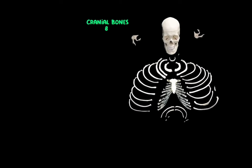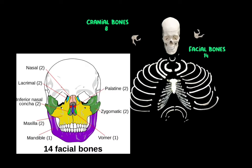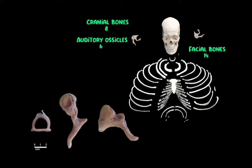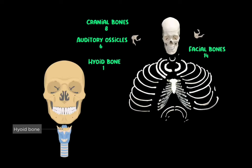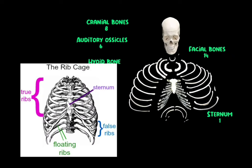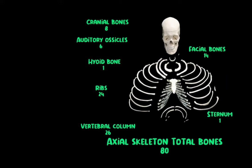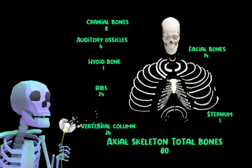You have 8 cranial bones, 14 facial bones, 6 auditory ossicles — 3 ossicles present in each ear — 1 hyoid bone to which your tongue is attached, a sternum to which 12 pairs of ribs are attached, and the vertebral column has 26 bones. So in total the axial skeleton contains 80 bones.